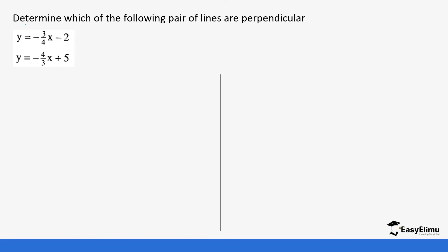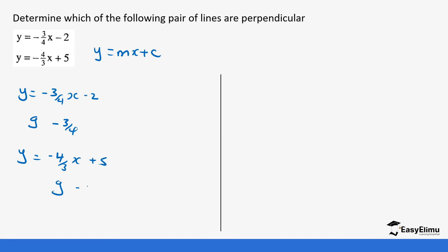Let's do one more. Our equations have always been written in the form y equals mx plus c — if you get two equations not in this form, always rearrange them first. The first equation is y equals negative three-quarters x minus 2, so the gradient is negative three-quarters. The second equation is y equals negative four-thirds x plus 5, so the gradient is negative four-thirds. Multiplying: negative three-quarters times negative four-thirds simplifies to positive one, which is not equal to negative one. So these two lines are not perpendicular.